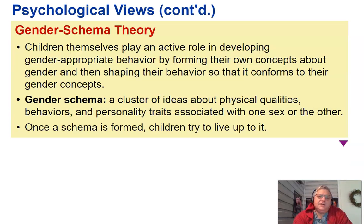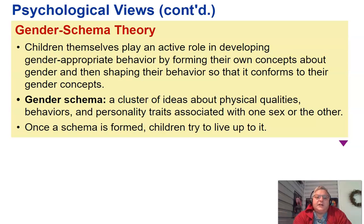Gender schema theory holds that children themselves play an active role in developing gender-appropriate behavior by forming their own concepts about gender and then shaping their behavior to conform to those gender concepts. A gender schema is a cluster of ideas about physical qualities, behaviors, and personality traits associated with one sex or the other. Once a schema is formed, children try to live up to it.